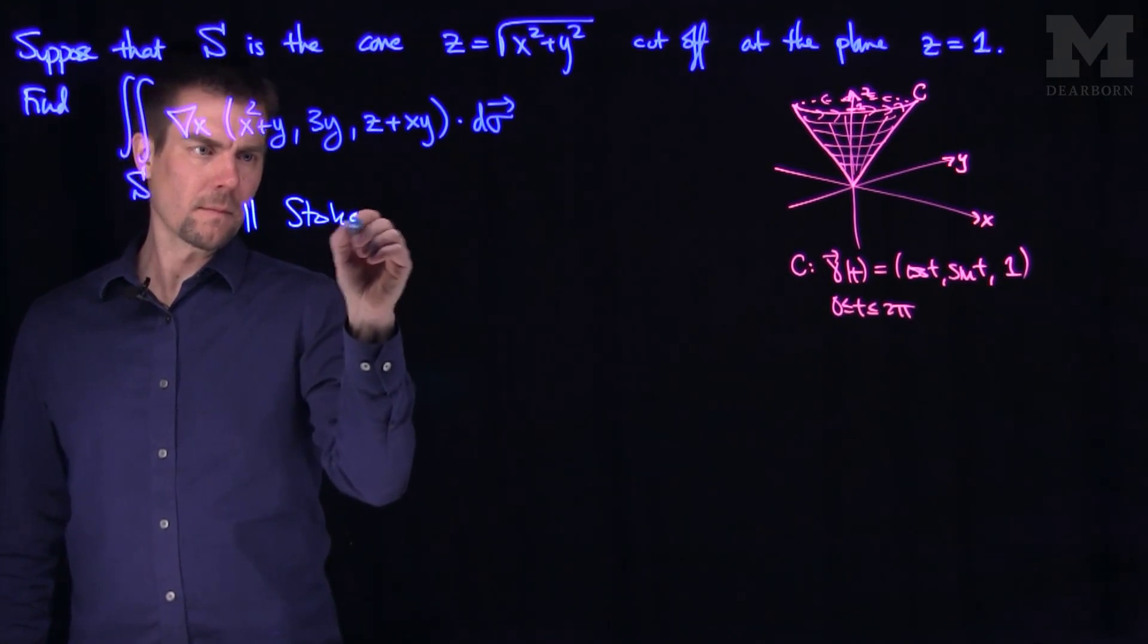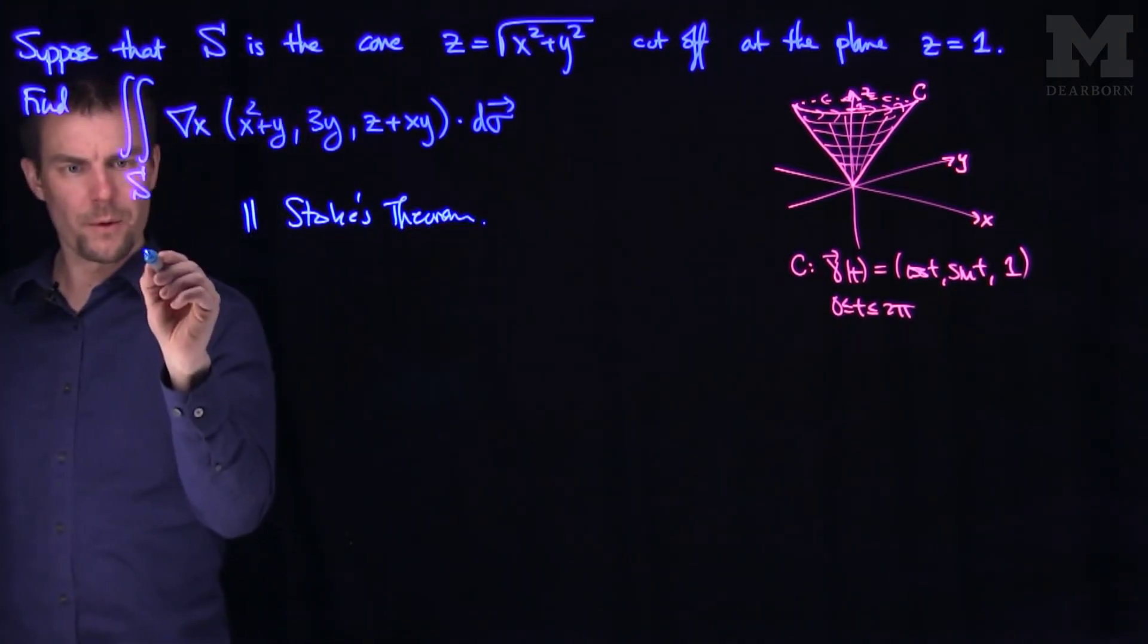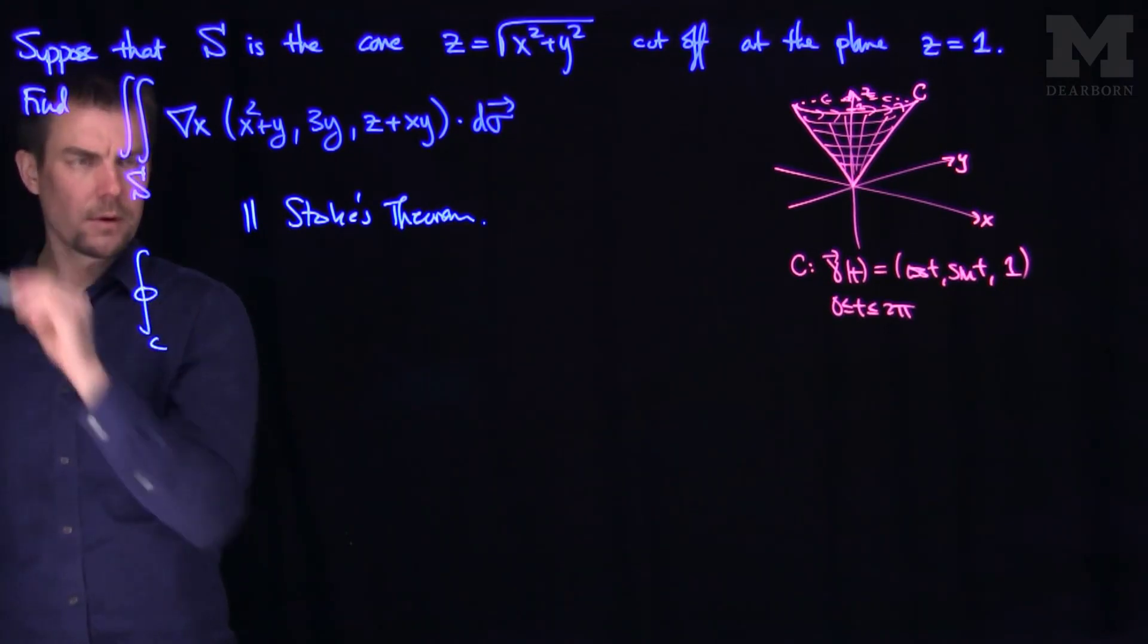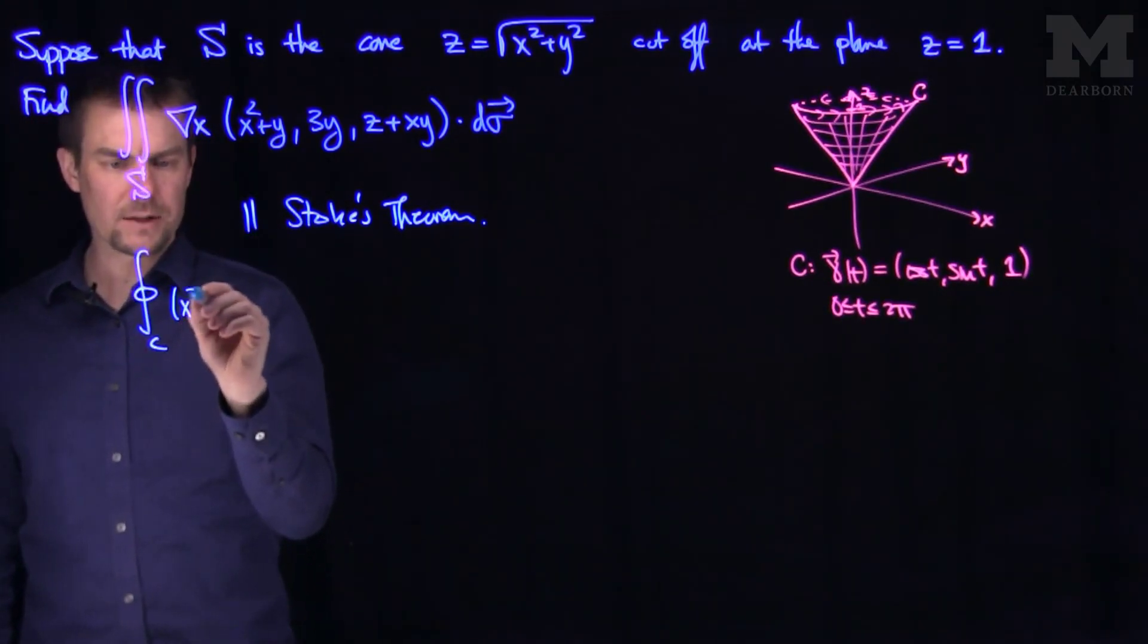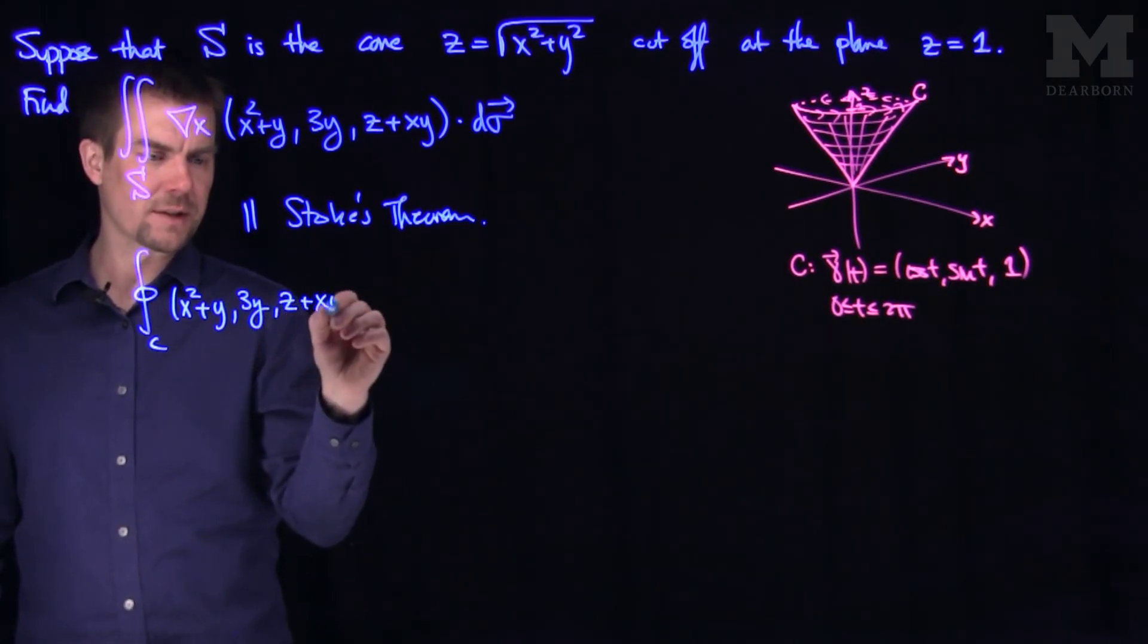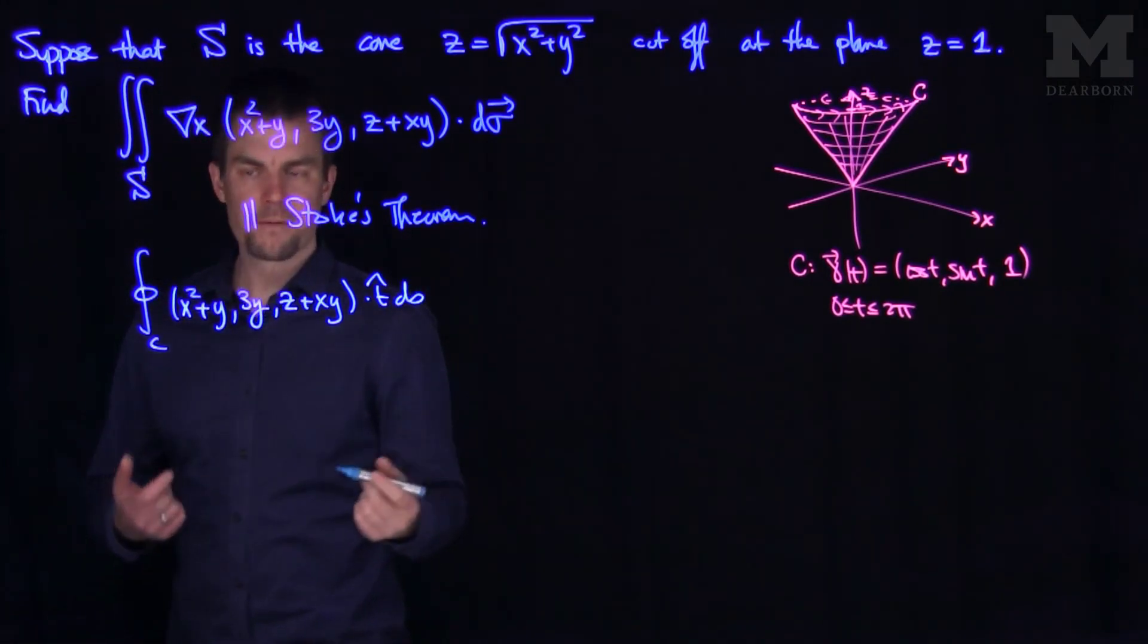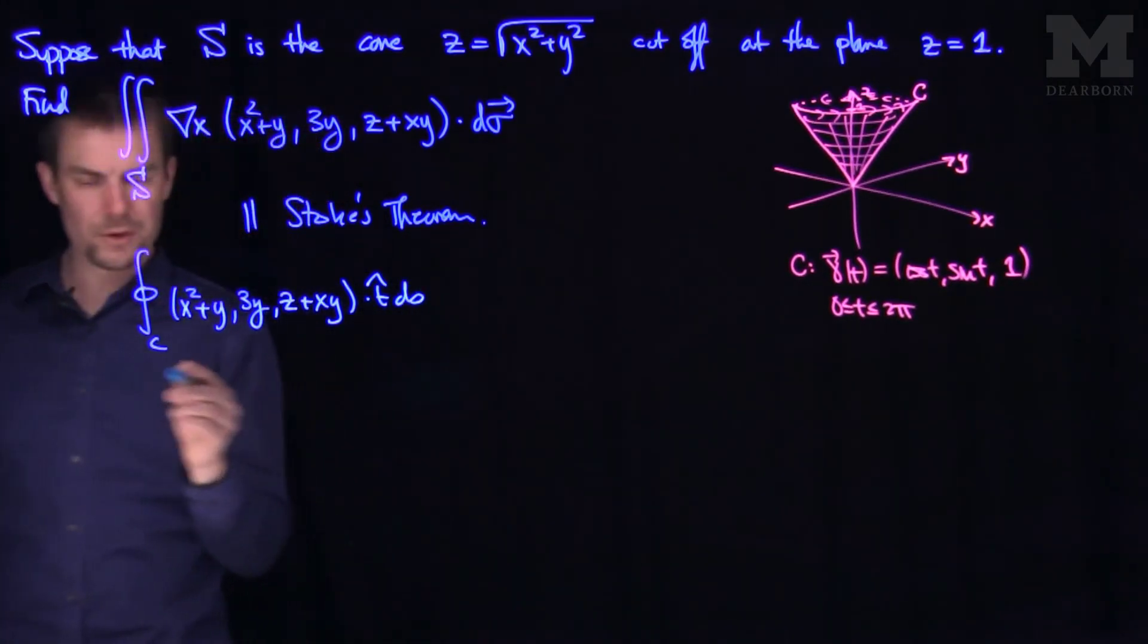this will be the flow integral over that curve C of the vector field itself of x squared plus y comma 3y comma z plus xy dot T hat ds. And now we've found what these things are on the curve. I have my curve parameterized.